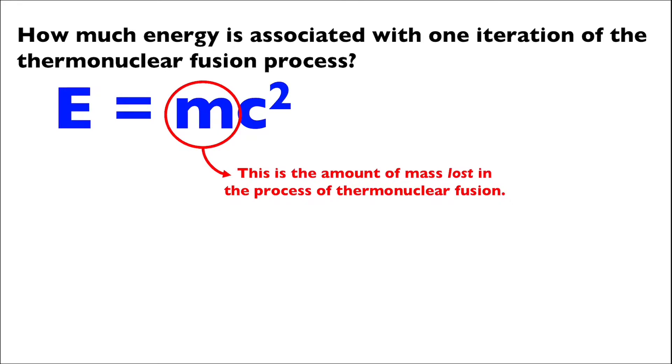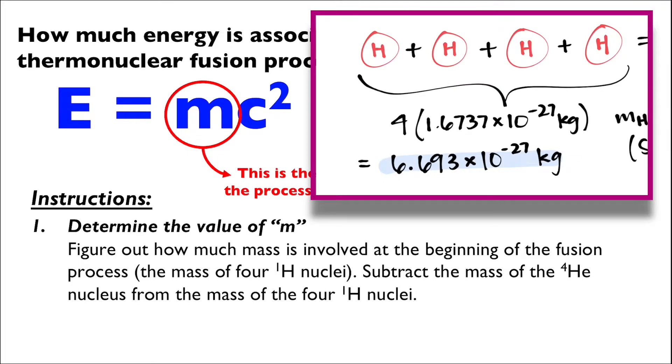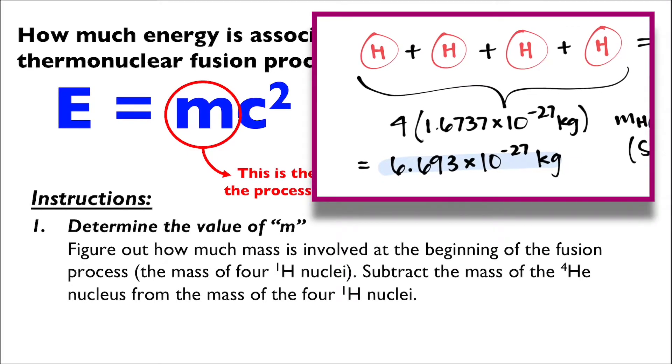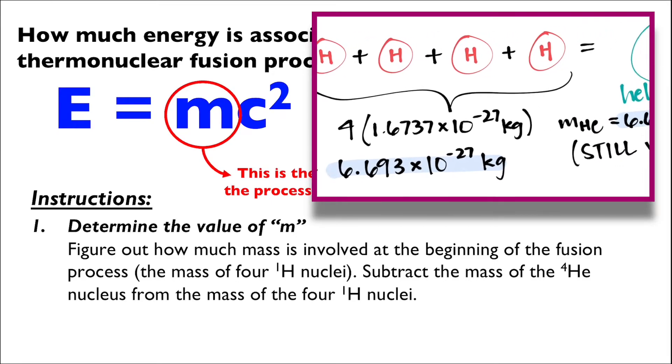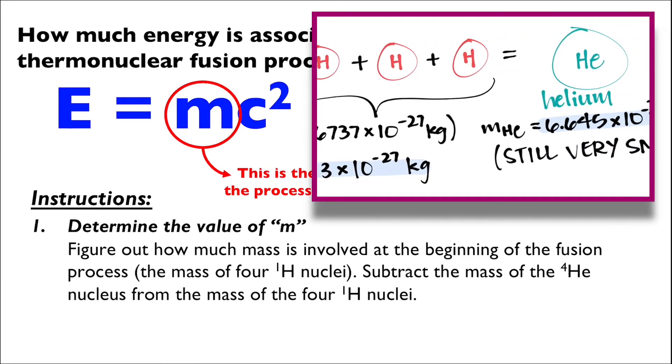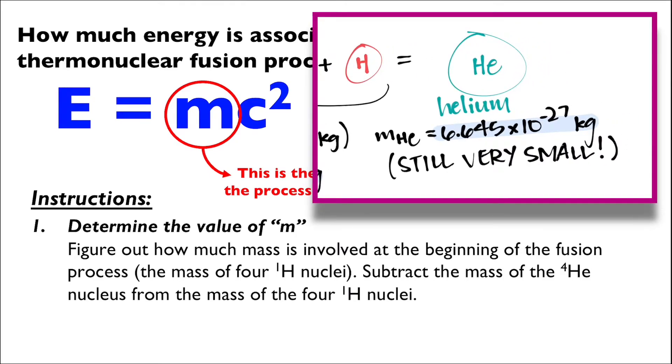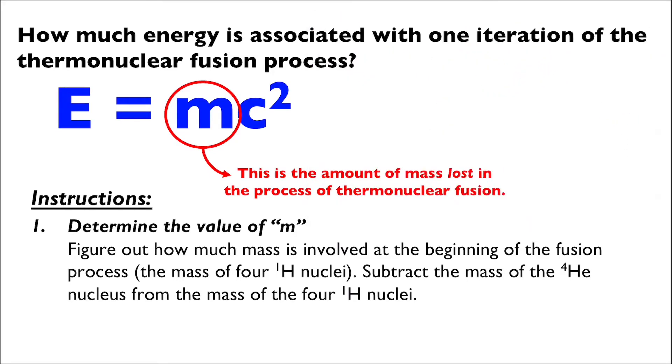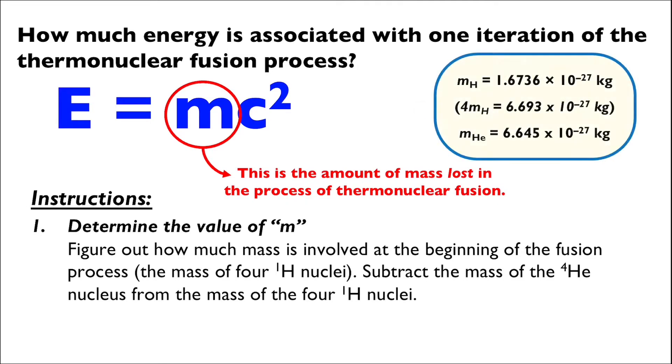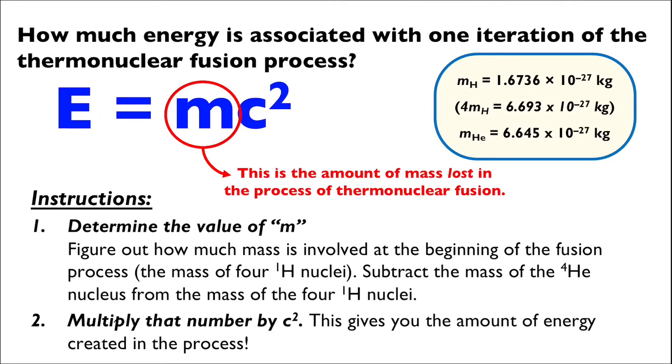We'll start with determining the value of M, the mass lost in the process. To do this, we'll first need to know how much mass is involved at the beginning of the fusion—the mass of the four hydrogen nuclei—and then from that number, we'll subtract the mass of the single helium nucleus. These are the values that we'll use for the mass of the four hydrogen nuclei and the helium nucleus. Once we have that number, we'll multiply it by the speed of light squared.